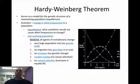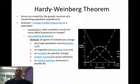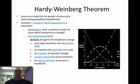Whenever we talk about population genetics, we have to talk about the Hardy-Weinberg theorem, which basically serves as a model for the genetic structure of a non-evolving population. Non-evolving is important, because what that means is that evolution is not occurring in a population for you to use the Hardy-Weinberg principle. So there have to be five criteria that you meet.